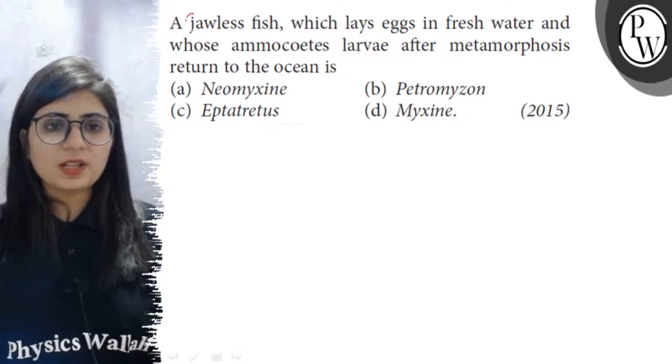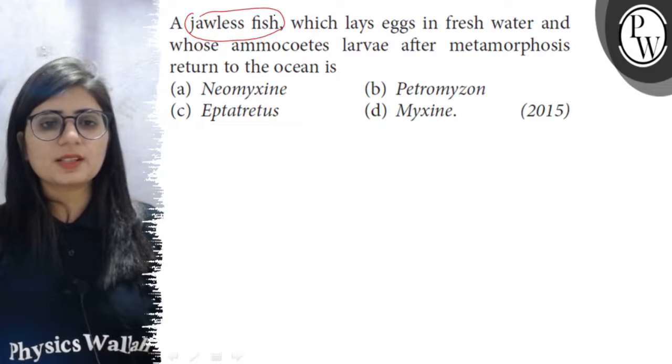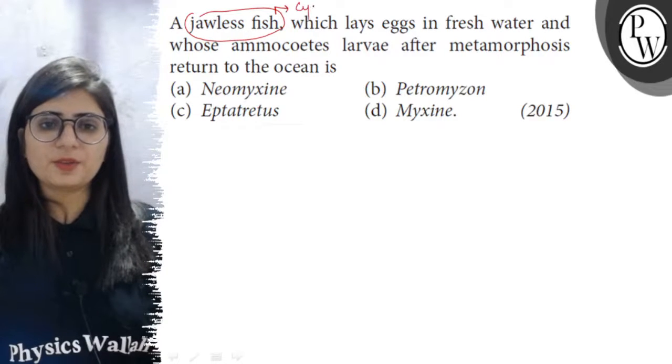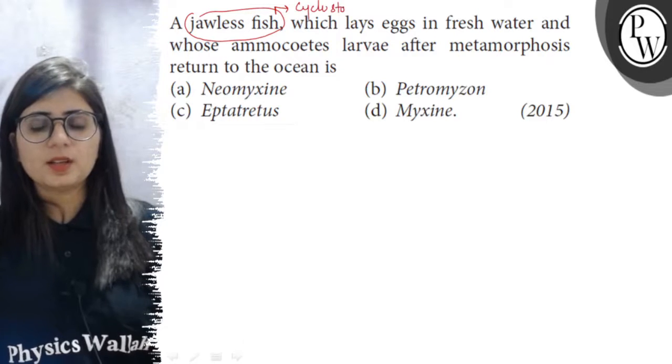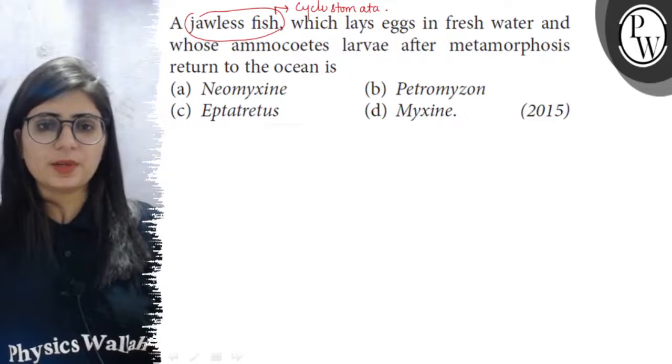Let's see the question now. Jawless fish, the jawless fishes are kept in a group which is known as Cyclostomata. Cyclostomes are the jawless vertebrates.